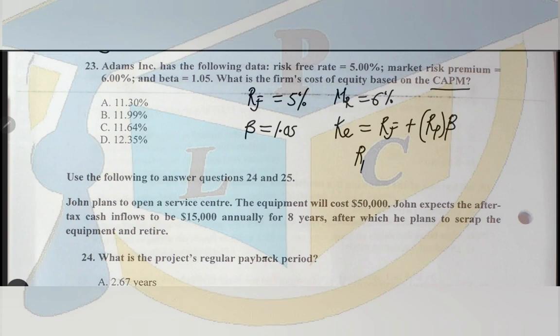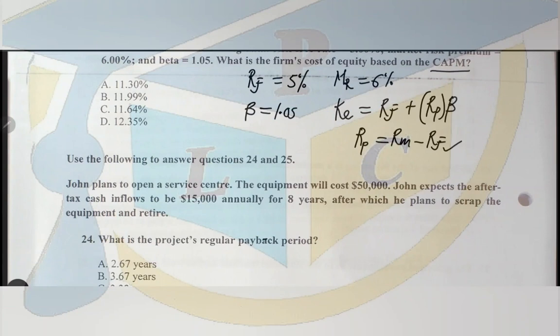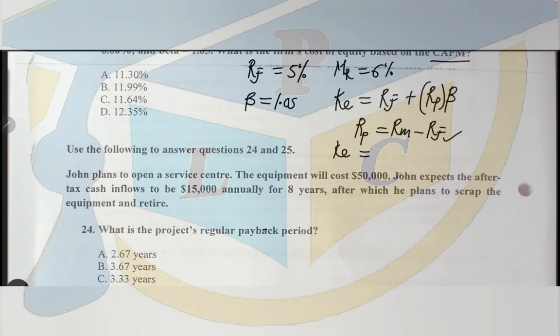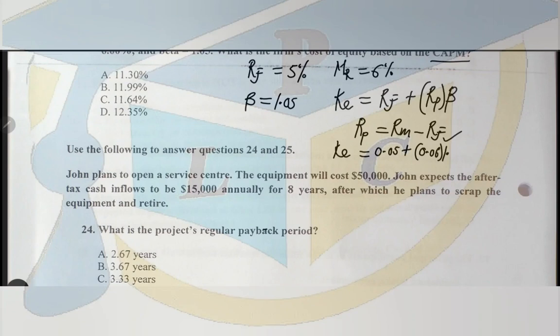Risk premium = returns on the market minus the risk-free rate. But here in the question we have been directly given the market risk premium, so there is no need to compute it separately. Therefore, cost of equity (Ke) = 0.05 + 0.06 × 1.05.